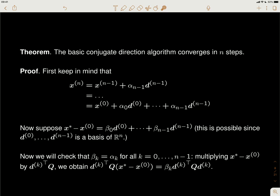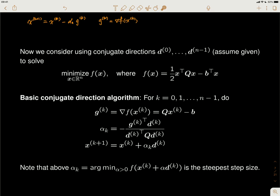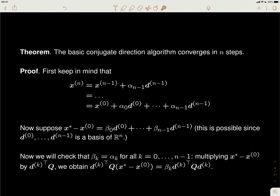A key property of this conjugate direction algorithm: if you have the Q-conjugate directions and apply these three steps each iteration, it is guaranteed to reach the minimum within n steps, where n is the dimension of x.